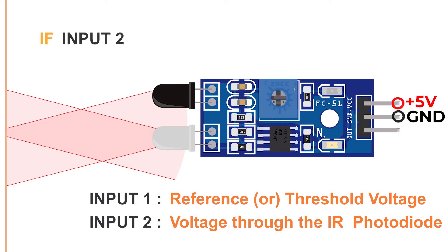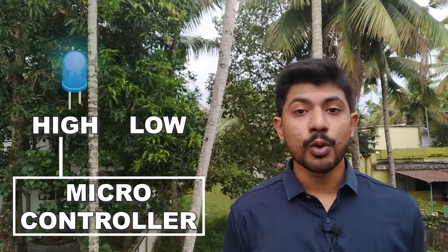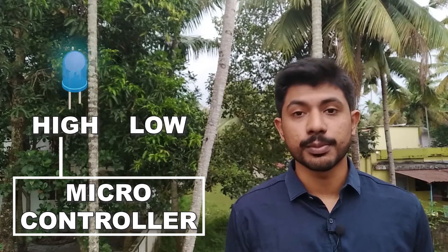When the voltage to the photodiode is lower than the set threshold voltage, then the op-amp outputs a low signal. If the voltage to the photodiode is equal to or higher than the set threshold voltage, then it outputs a high signal. These digital high or low output signals can be used to actuate small relays and LEDs, or they can be fed as input signals for a microcontroller which takes more complicated decisions on how to use this input.